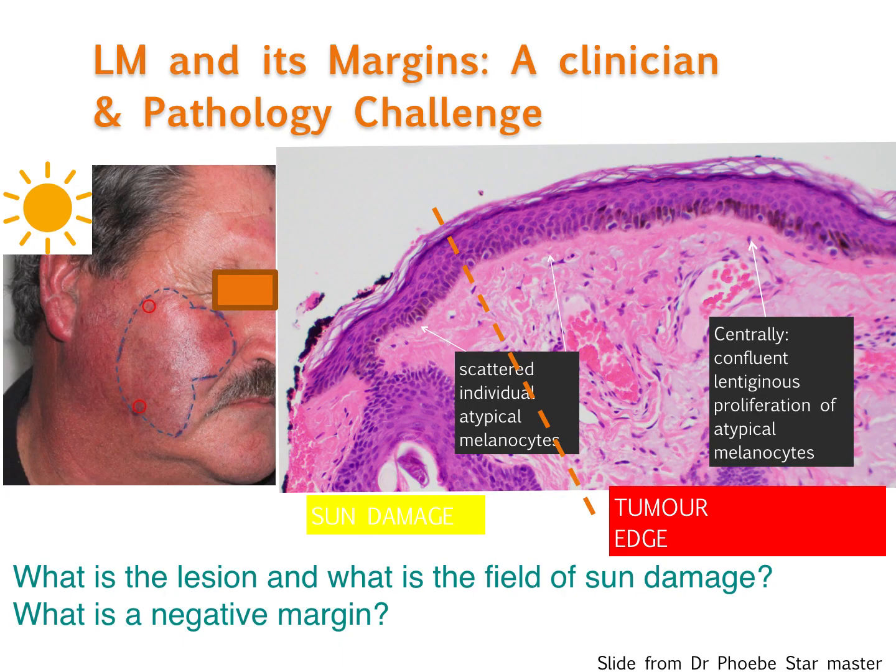Why is it a problem? It's because it's difficult to differentiate the lesion from the scattered individual atypical melanocytes that you can find on sun-damaged skin. And what constitutes a negative margin is sometimes very difficult to assess.